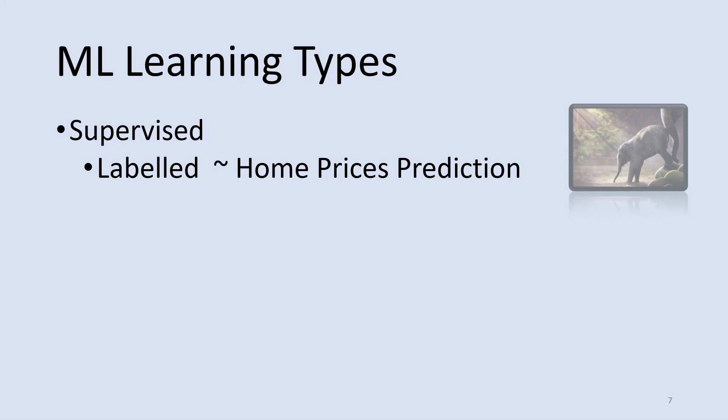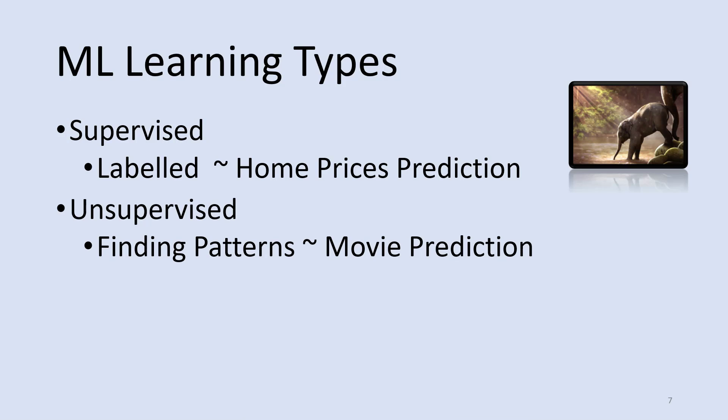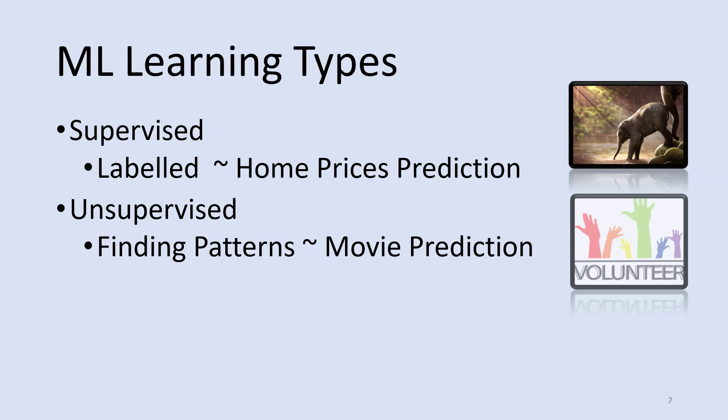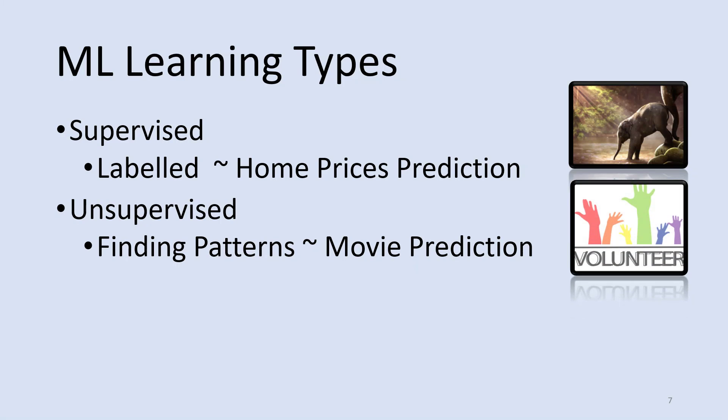The second type is unsupervised machine learning, where you are trying to find patterns. A good example is Netflix — how many of you have Netflix? How many have gotten binge-watching on movies or series? What's happening is they're using patterns of what you're watching and liking to predict the next movie you might like. That has made me spend countless hours watching things after that.